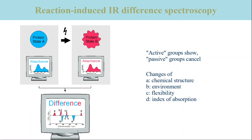Thus, there is a negative band at lower wavenumber and a positive band at higher wavenumber. In the case of the amide-1 vibration of proteins, band shifts can be ascribed to an altered coupling with neighboring amide oscillators due to a change in backbone structure, or due to a different degree of hydrogen bonding, which changes the electron density in the CO double bond.